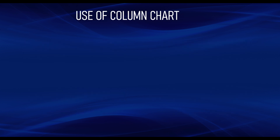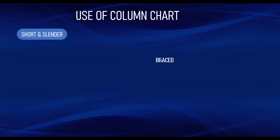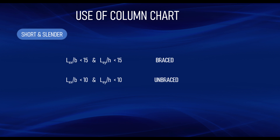Column design charts can be used for either short or slender columns. According to the BS code, for a braced column, if the effective length divided by the column size is less than 15, the column is short. For an unbraced column, if effective length divided by column size is less than 10, it is short. When it exceeds 10 or 15 respectively, the column is slender. You can check out my video on short and slender columns for more detail.